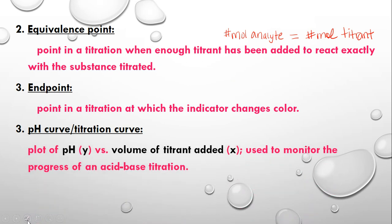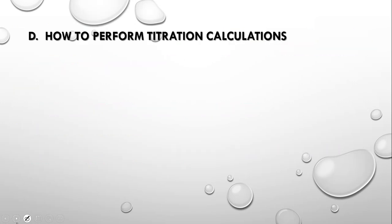Once you run your titration, you can plot a pH curve or a titration curve. A pH curve is a plot of pH — always on the y-axis — versus volume of titrant added — always on the x-axis. We use the pH curve to monitor the progress of an acid-base titration.